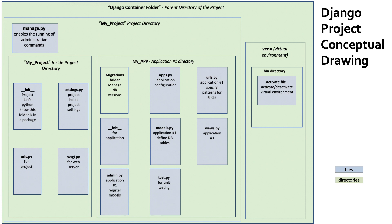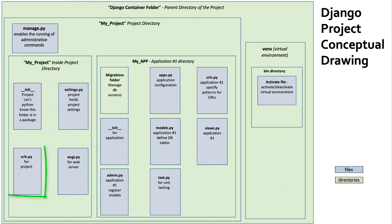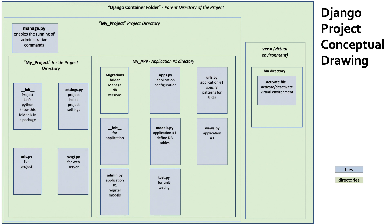Inside the project top directory, my_project directory, is a sub-directory also with the same name, my_project. Inside my_project lives the following four files: the init.py file, which lets Python know this is a package; the settings.py file, which holds all our project settings and configurations — very important, we'll be in and out of there a lot; the urls.py file for our project, which acts like an index for all the urls.py files in all the other applications; and wsgi.py, which is for setup and configuration of our production web server.